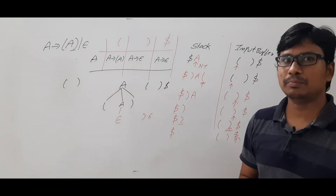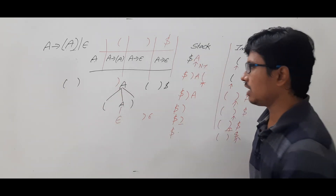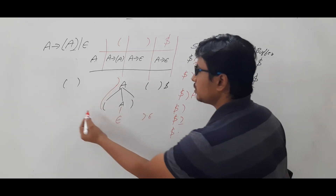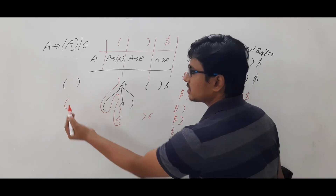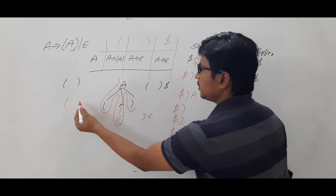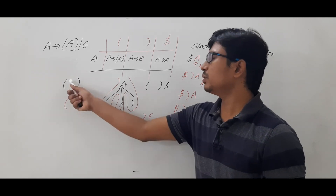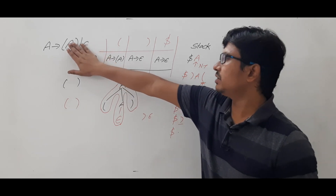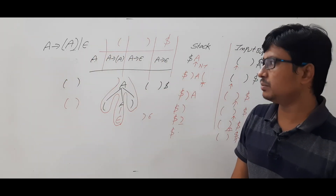To yield the parse tree, start from the root and go left. Whenever you get a terminal, write it down. Epsilon is considered a terminal here. You get the terminal sequence that forms the original string, confirming what we wanted to generate.